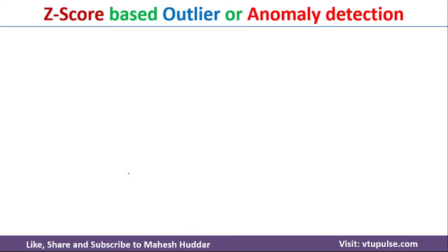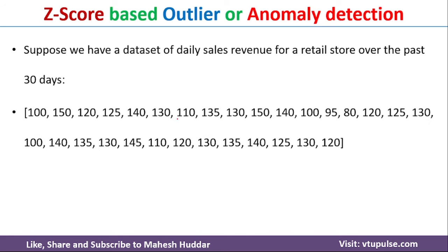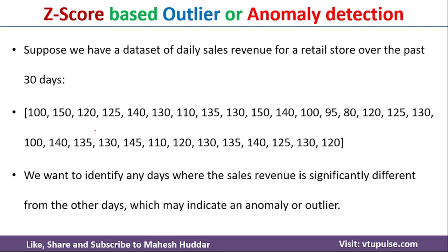To understand the Z-score-based method for detecting outliers, I will consider 30 days of sales revenue of a retail store. The data looks something like this — on the first day there was 100 units of revenue, 150 units on the second day, and so on for each day. Given this data, we need to identify the sales revenue which is significantly different from other days — that is, identify the anomaly or outlier and remove it from the dataset.